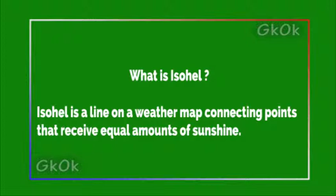What is an isohill? An isohill is a line on a weather map connecting points that receive equal amounts of sunshine.